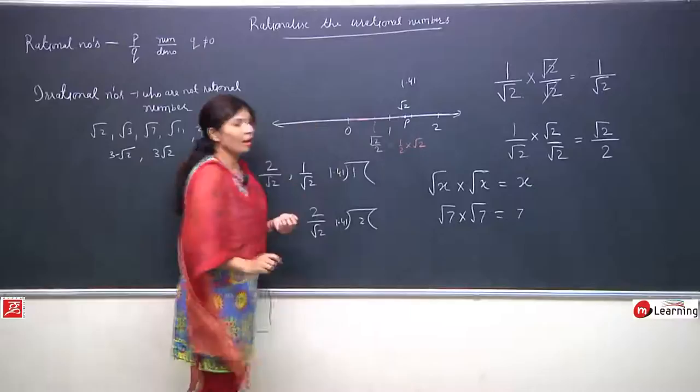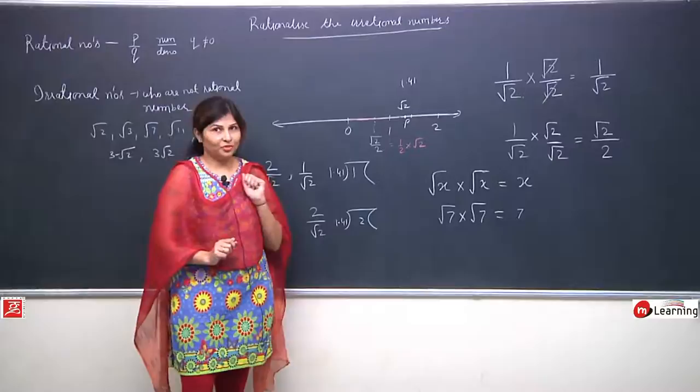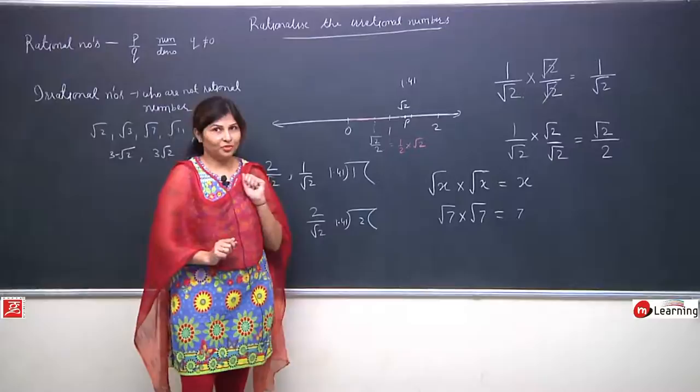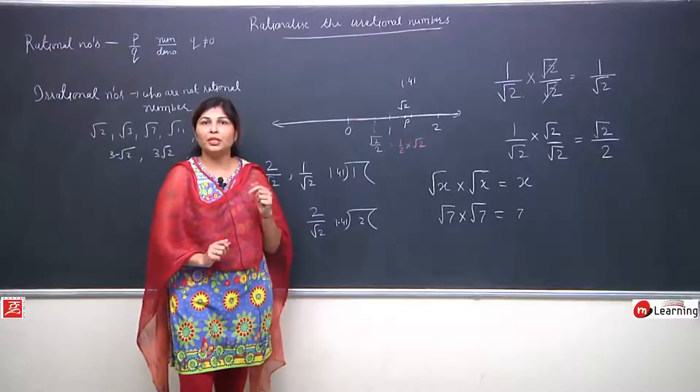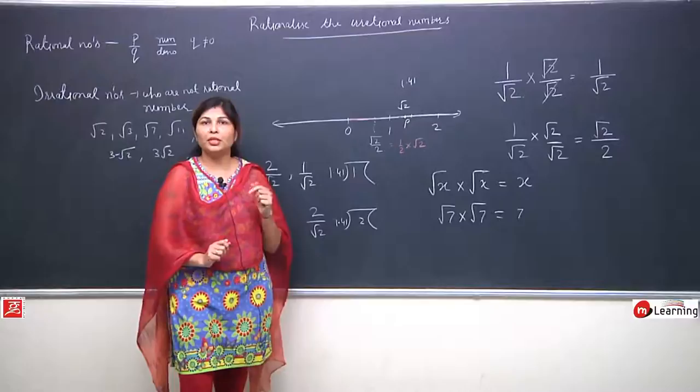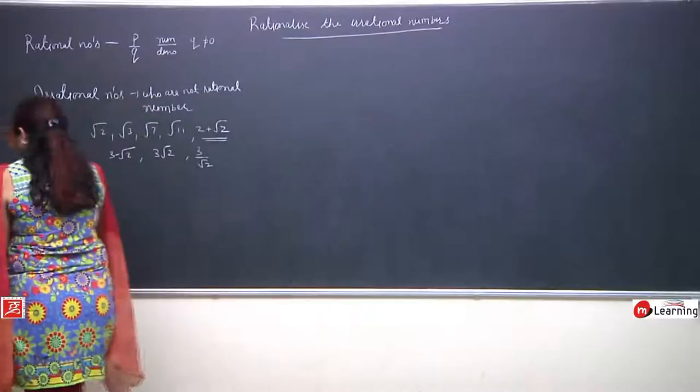But when it was 2 upon root 2, plotting it was a little tough. So here we understand the utility of rationalization - the purpose of removing the root from the denominator, and converting the irrational number in the denominator to rational. Now let us practice rationalization with small examples.